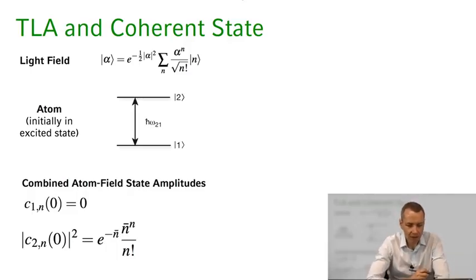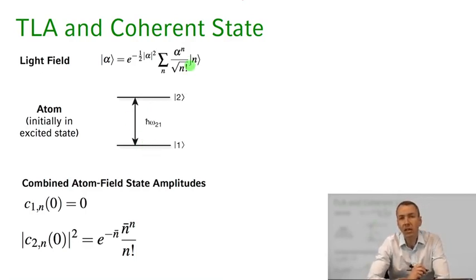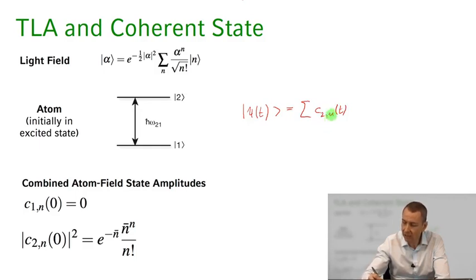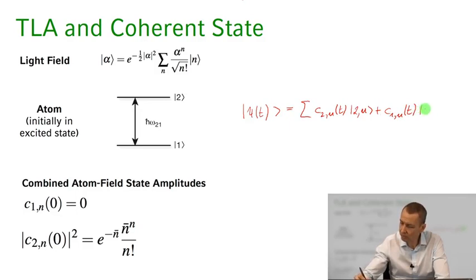So here's our light field and here's the atom, and the light field we suppose to be in a coherent state. Remember that at any point in time we can write down the combined state of the atom and the light field as a sum over C2n of t — the atom being in the excited state with n photons in the system — plus C1n of t, the atom being in the ground state with n photons in the system, with n running from 0 to infinity.